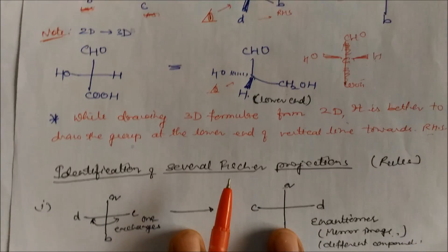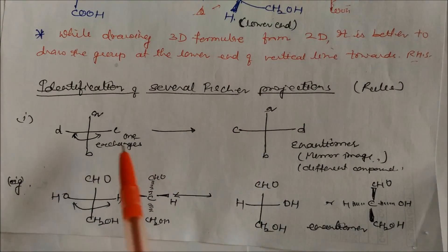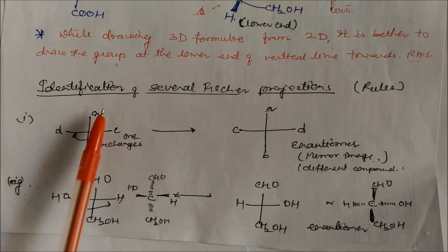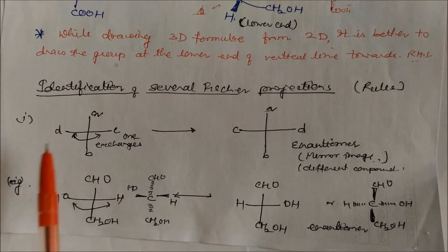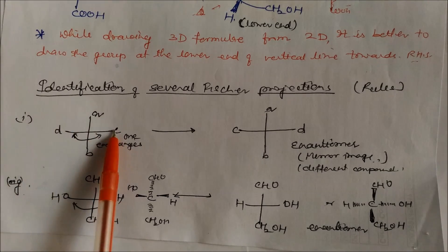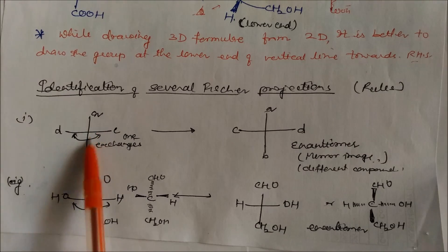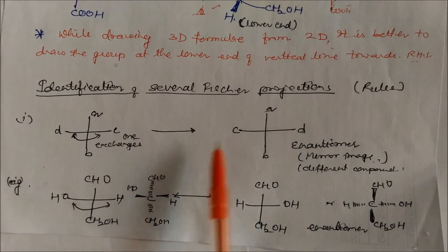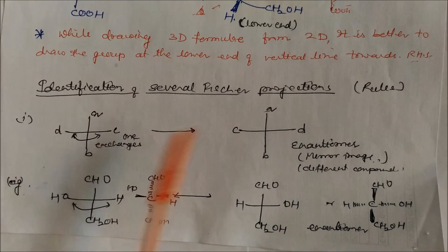Now, identification of equivalent Fischer projections. Given groups A, B, C, and D: if you exchange C and D positions (one exchange), A and B remain constant. C comes to a new side, making the structure an enantiomer of the original — a mirror image. So one exchange of two groups gives an enantiomer of the compound.